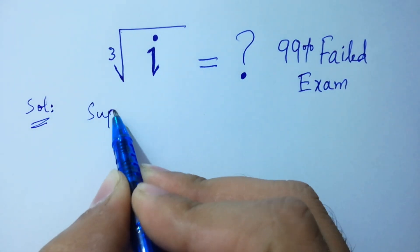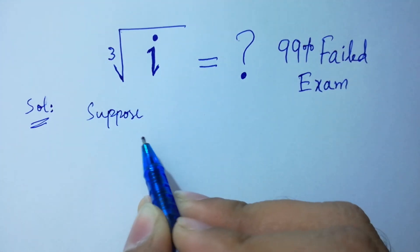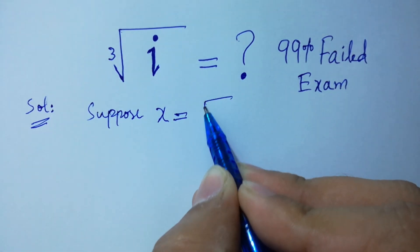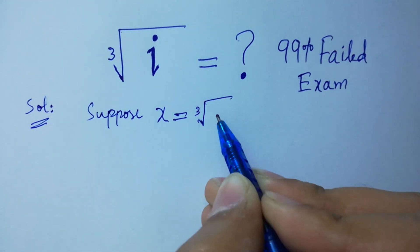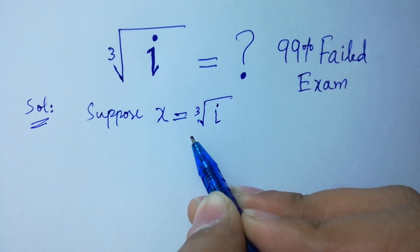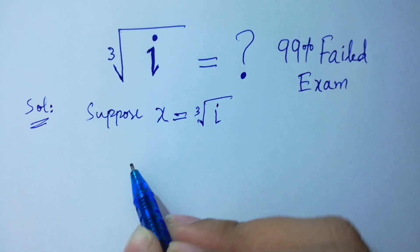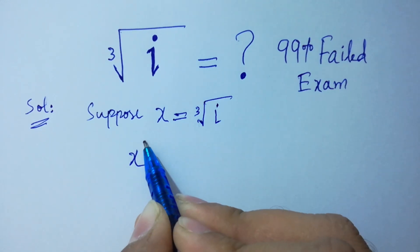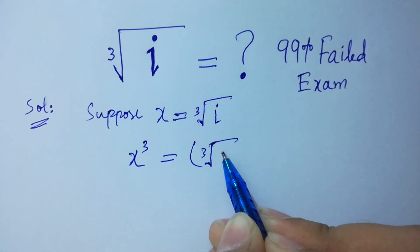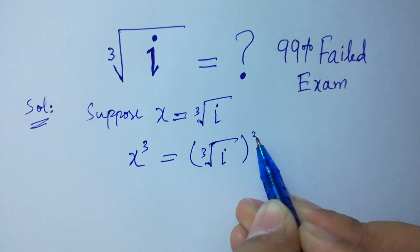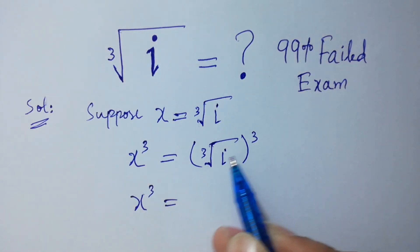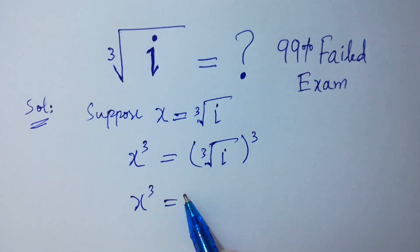Suppose that x equals the cube root of i. To get rid of this cube root, take the cube on both sides: x³ equals the cube root of i, cubed. The cube and cube root cancel, leaving us with x³ = i.